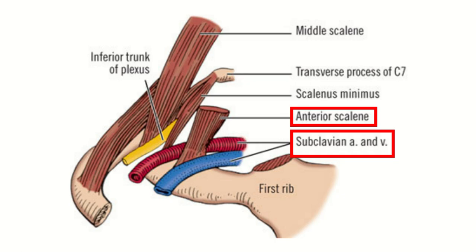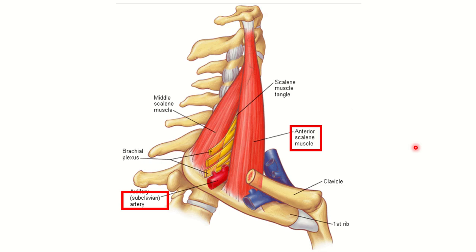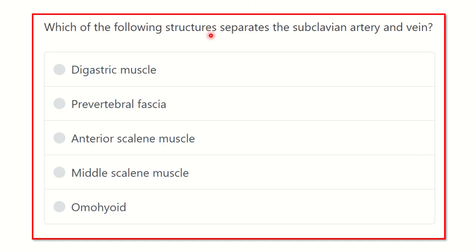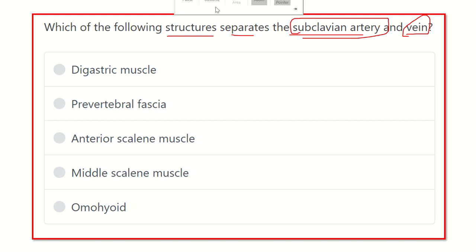Welcome to another question and answer session for the MRCS exam. The question is: which of the following structures separates the subclavian artery and vein? We need to find the structure located between the subclavian artery and subclavian vein. The options are: digastric muscle, vertebral fascia, anterior scalene muscle, middle scalene muscle, and omohyoid.